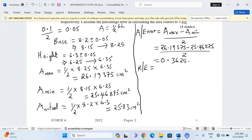There is something else called relative error, which is usually given by absolute error divided by the actual area. So now we need to take 0.3625 and divide it by the actual area, 25.83.